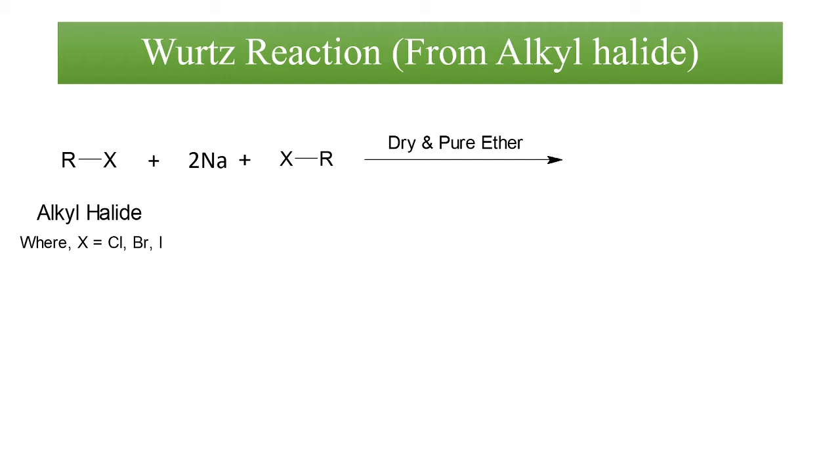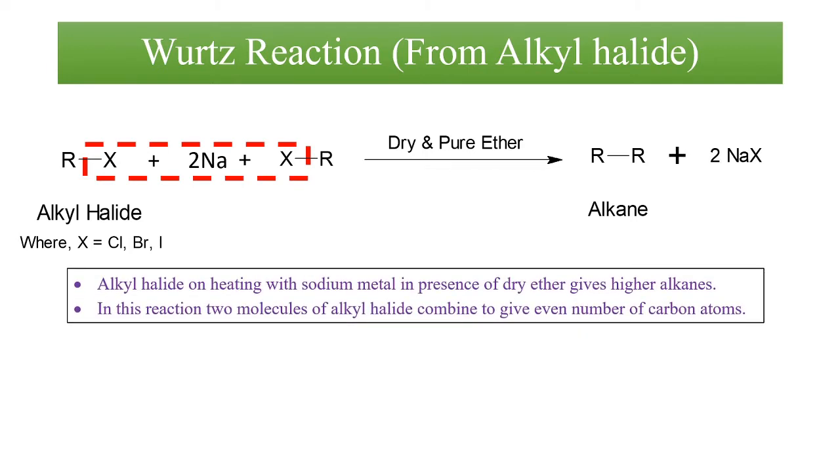Now, sodium has affinity for the halogen, so it will form the byproduct NaCl or NaX, and the two alkyl groups will combine to give higher alkane. Thus, alkyl halides on reaction with sodium metal in presence of dry ether gives higher alkane. In this reaction, two molecules of alkyl halide combine to give even number of carbon atoms.